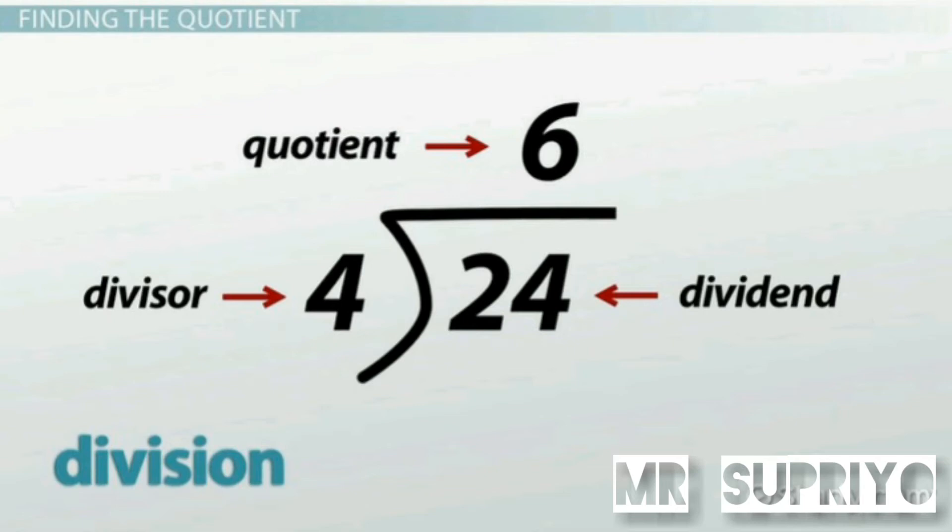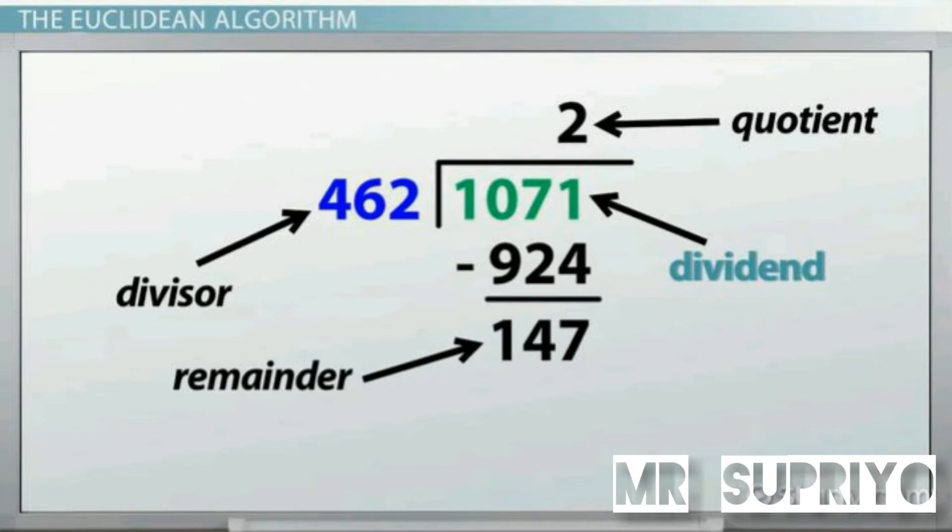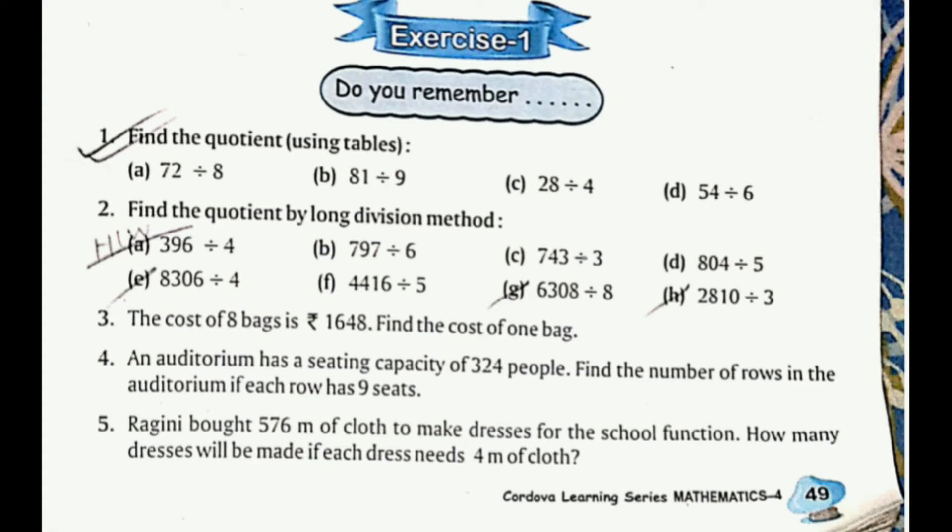I'm repeating again: the number to be divided is called the dividend, the number by which we divide is called the divisor, and the answer in the division is called the quotient. Something is missing - yes, the remainder. The number that is left over is called the remainder.